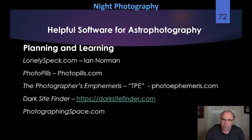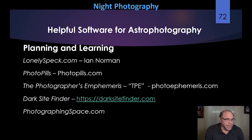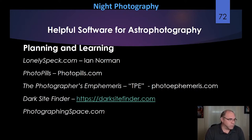Another great resource is PhotoPills — it gives you all the information you need about where the Milky Way is going to be. It's invaluable for seeing at any point in time and any place on Earth where the Milky Way, sun, planets, and moon will be, what direction you need to face, and whether a location is good. It's about $9 on both Android and iOS and very much worth it.